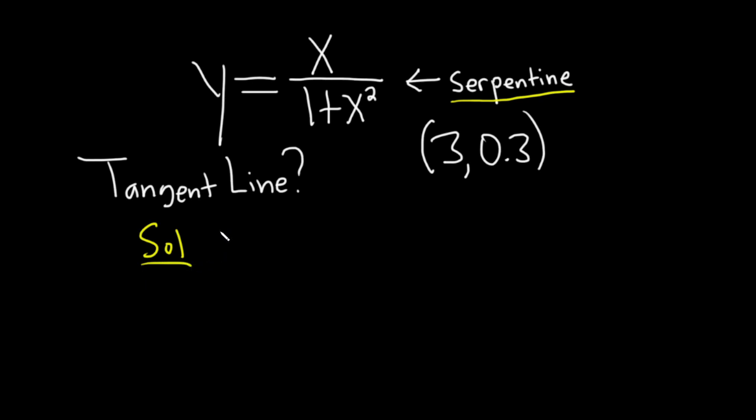To find the equation of the tangent line, we need a point and a slope. Because the tangent line and the function share a point, and this is the point they share, we already have the point, so that part is done. We just need the slope of the tangent line.